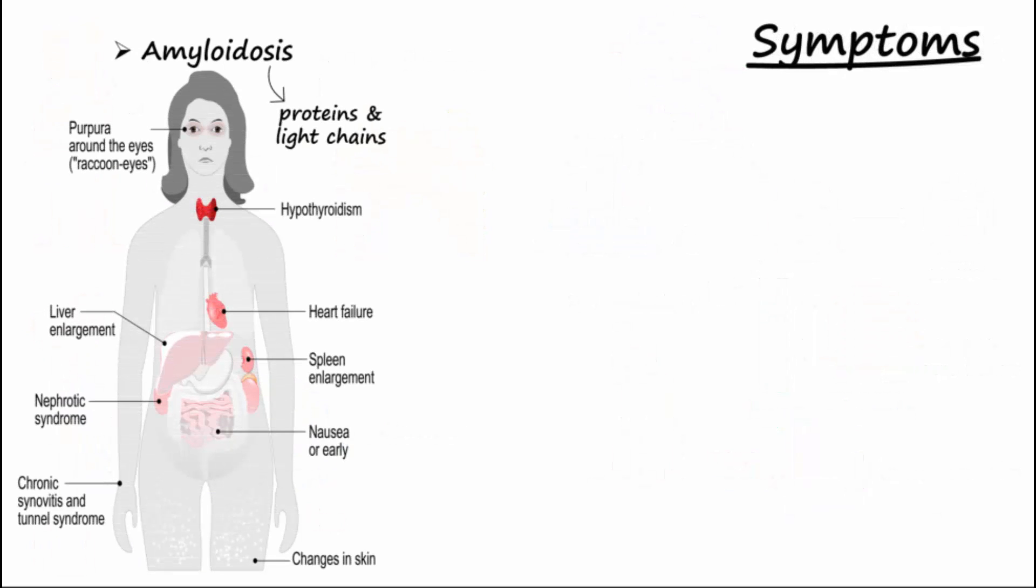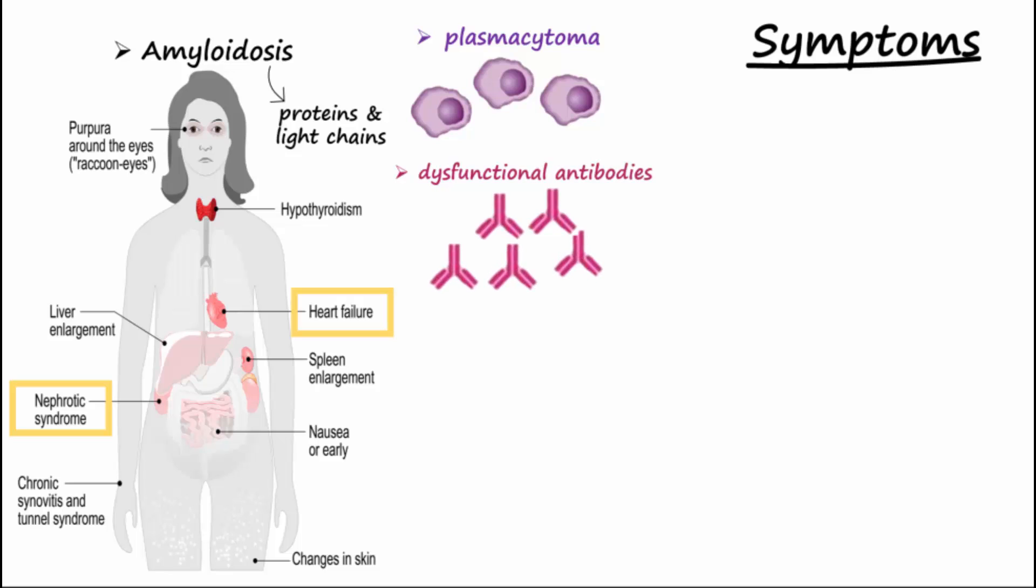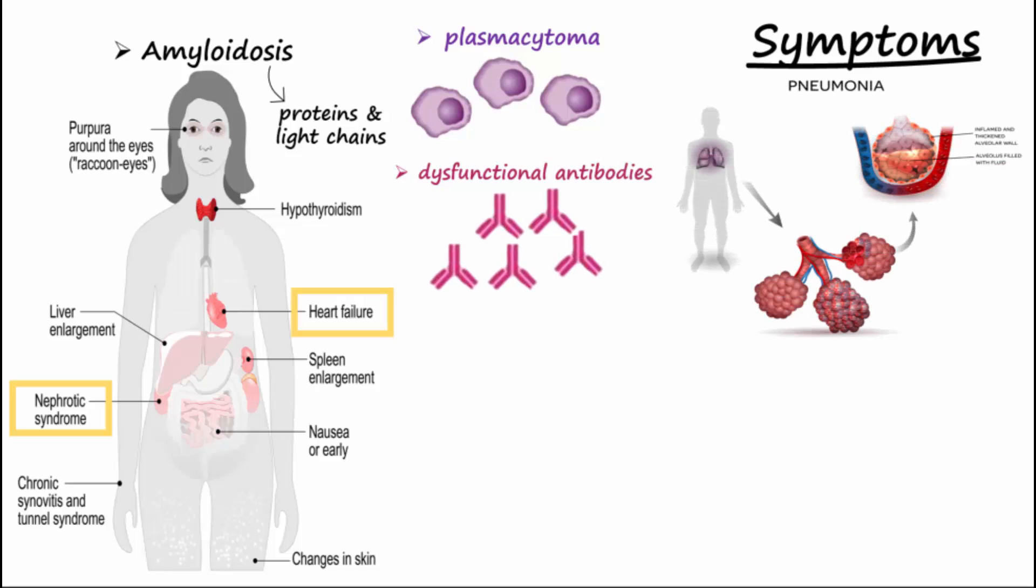Amyloidosis from proteins and light chains produced by the plasma cells can damage kidneys and the heart. Plasmacytomas produce lots of immunoglobulins, but they are dysfunctional, increasing the risk for infections like pneumonia and pyelonephritis.